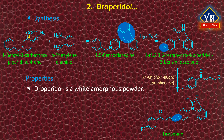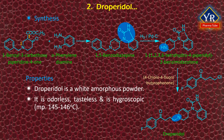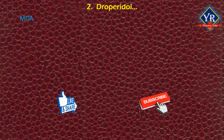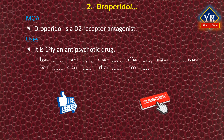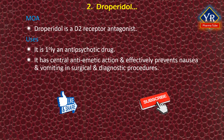Droperidol is a solid white to light tan, amorphous or microcrystalline powder. It is odorless, tasteless, and hygroscopic, with a melting point between 145–146°C. It is sensitive to light, air, and heat, and when heated to decomposition it emits toxic fumes of fluoride and oxides of nitrogen. Droperidol is a dopamine D2 receptor antagonist with some histamine and serotonin antagonist activity. It is primarily used as an antipsychotic and has a central antiemetic action, effectively preventing nausea and vomiting in surgical and diagnostic procedures.